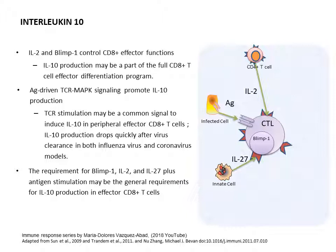Finally, interleukin-27, a product of innate immune system cells, is also a key factor in producing interleukin-10, which helps dampen inflammation and decrease tissue damage. This mechanism is triggered after much of the inflammation has already occurred — the cytotoxic T lymphocyte perceives all these products of inflammation as an end-stage signal and begins producing interleukin-10 to dampen that reaction.